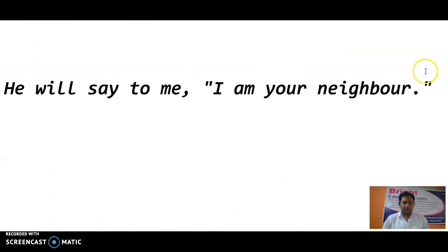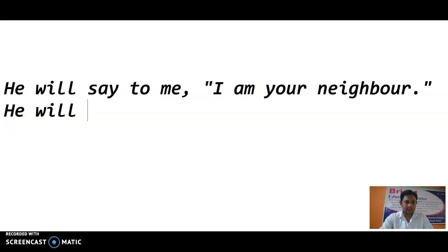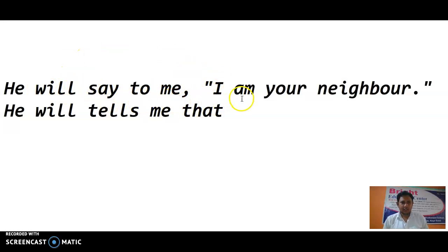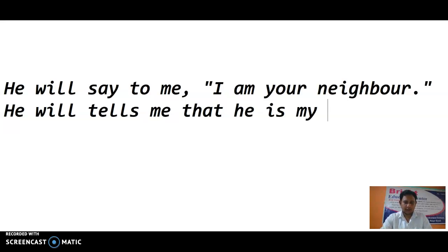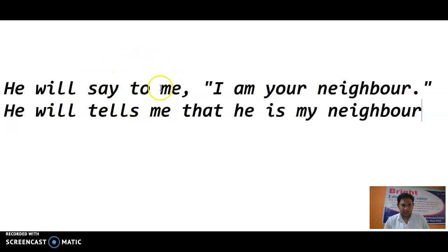Next: He will say to me, 'I am your neighbor.' The right answer: 'will say to' is converted into 'will tell'. Inverted commas are removed, 'that' is added. 'I' becomes 'he' and 'your' becomes 'my'. So: He will tell me that he is my neighbor — that will be the right answer.